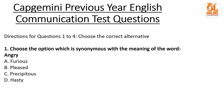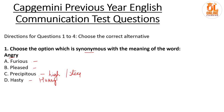Choose the option which is synonymous with the meaning of the word 'angry.' Synonymous means having similar meaning to the word angry. Let's check out the options. Furious — furious is a synonym of angry. Pleased means making someone happy or satisfied. Precipitous means something which has a steep incline. Hasty is also known as hurry. So basically these three words have no meaning similar to angry, and the synonym will be option A: furious.